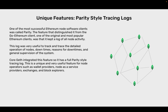Unique features: Parity-style tracing logs. One of the most successful Ethereum node software clients was called Parity. The feature that distinguished it from the Go Ethereum client — one of the original and most popular Ethereum clients — was that it kept a log of all node activity. This log was very useful to track and trace the detailed operation of nodes, downtimes, reasons for downtimes, and general supervision of the system. CoreGeth integrated this feature, so it has a full parity-style tracing log. This is a unique and very useful feature for node operators such as wallet providers, node-as-a-service providers, exchanges, and block explorers.